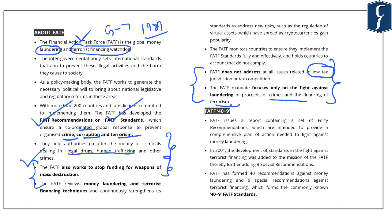There is a term called the FATF 40 plus 9. This is a report containing a set of 40 recommendations intended to provide a comprehensive plan of action needed to fight against money laundering. In 2001, the FATF added 9 special recommendations to these 40 recommendations, and accordingly these have come to be known as FATF 40 plus 9 standards. This is another important term that can be asked in your preliminary examination.